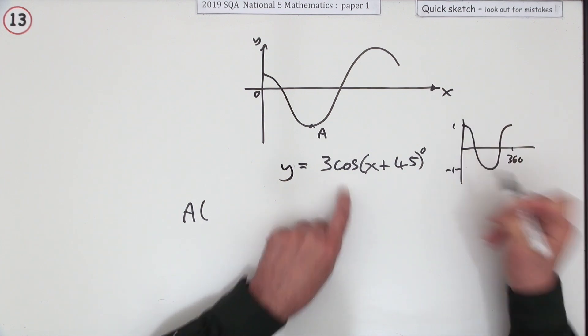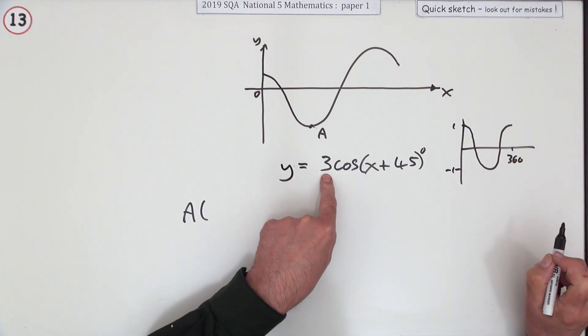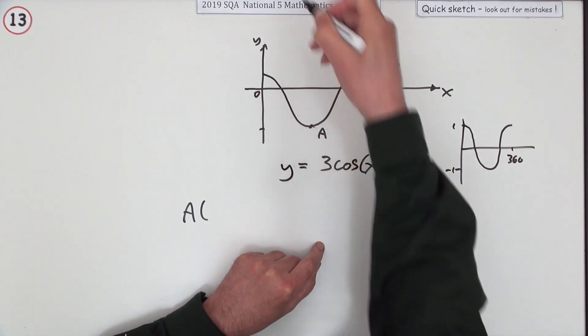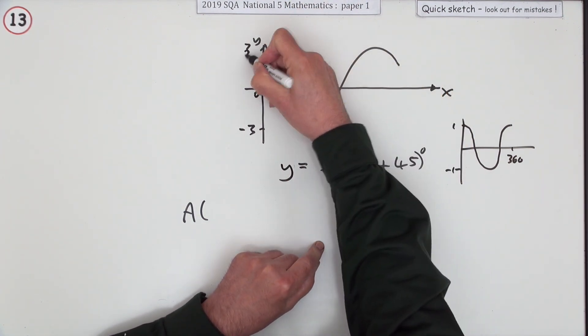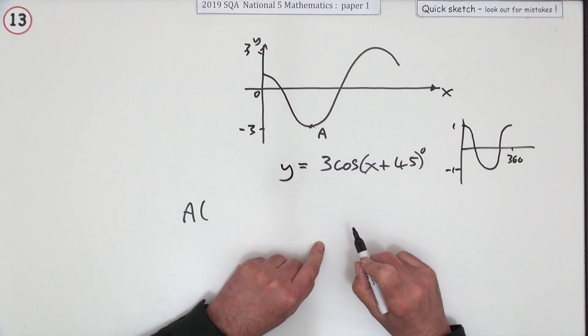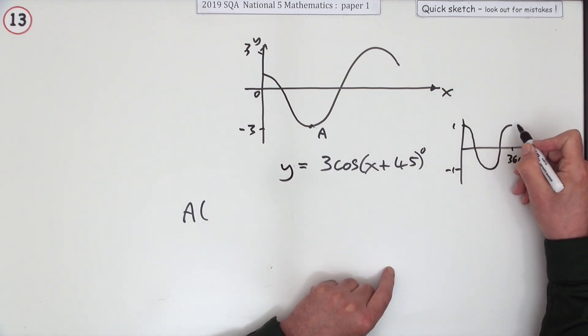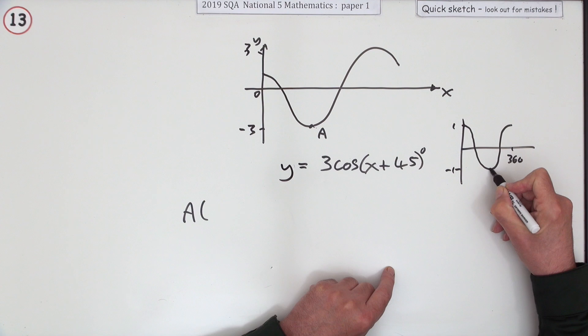Up to 1, down to negative 1. If this has got a 3 in front of it, it means this is really going from negative 3 up to 3.